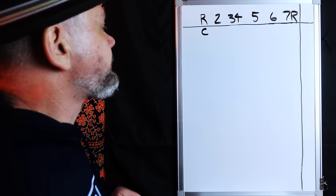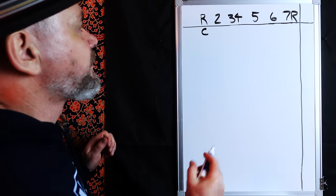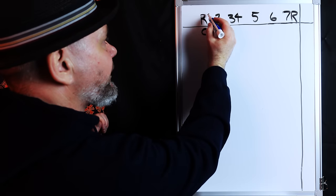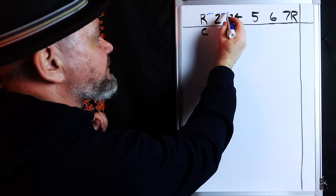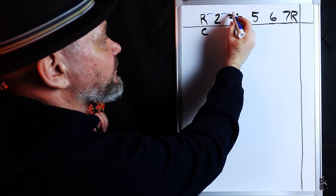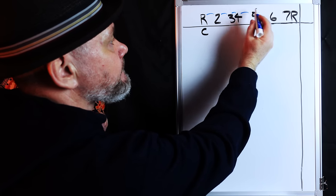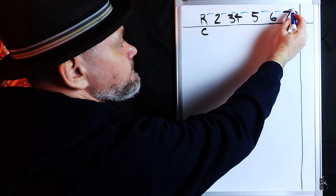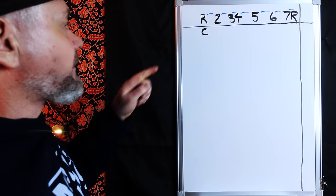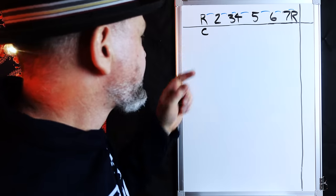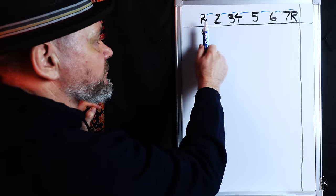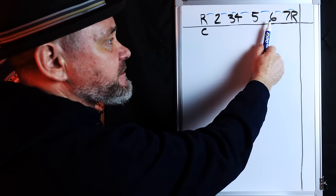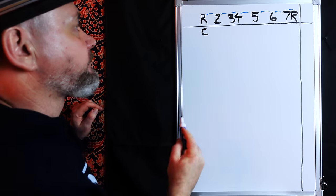Let's go with color blue. In order to create a major scale, you have to have the right spacing between the notes. R stands for root — the first note of the scale. Then the second, the third, the fourth, fifth, sixth, seventh, and back to the root again.